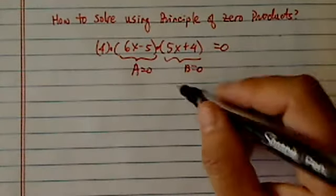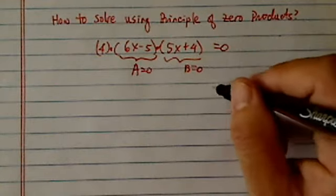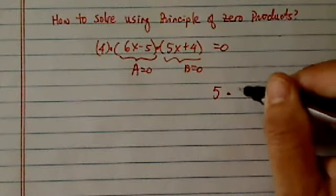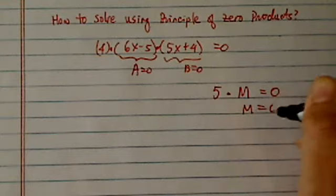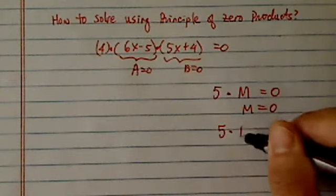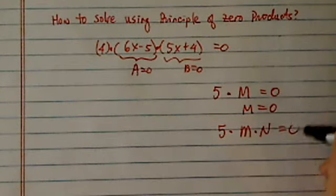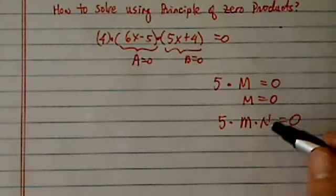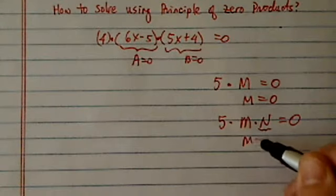This is because zero times anything equals zero. For example, five times M equals zero, then you know M has to equal zero. If I have five times M times N equals zero, then irregardless of what N is, if M equals zero,